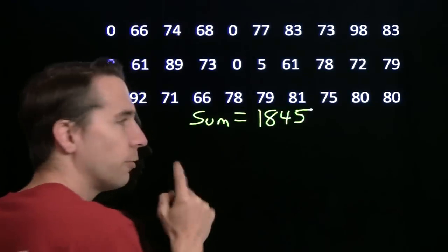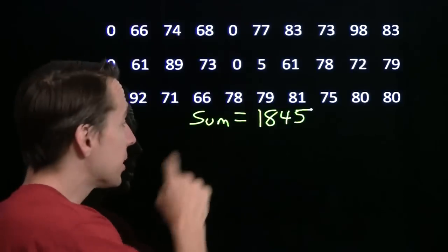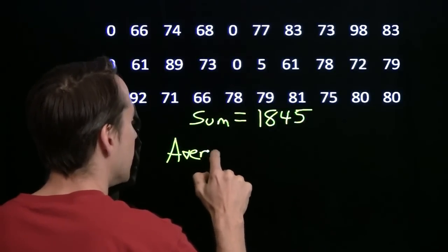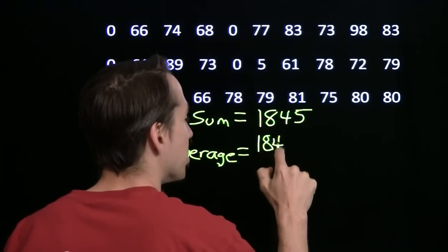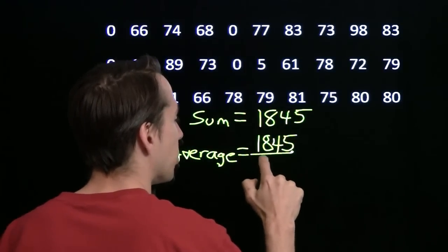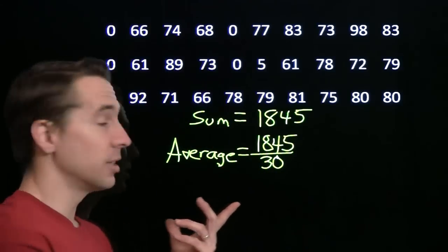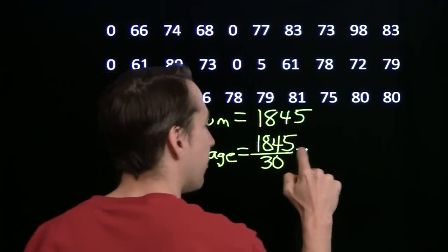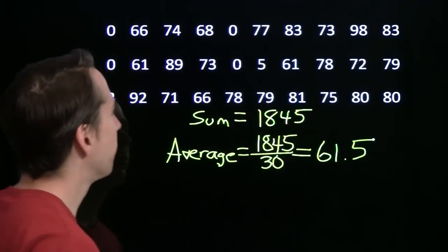So the sum is 1845. Yeah, yeah, yeah. I cheated. I added these up before the video. But the sum is 1845, so the average, we take the sum and we divide by how many numbers there are. There are 10 numbers in each row. We've got 30 numbers up there, so we're going to divide by 30. Now, 30 goes into 1800, 60 times. 30 goes into 45, 1 and a half times. So our average is 61 and a half, or 61.5.